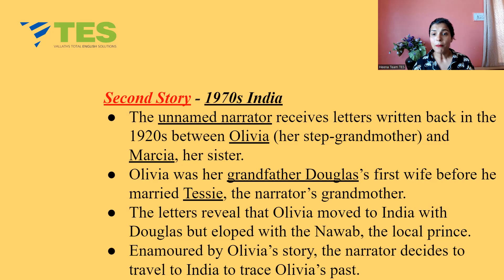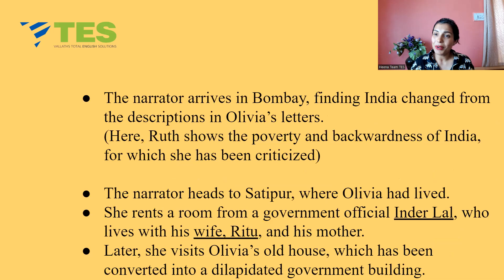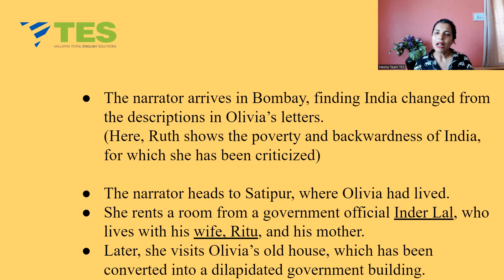Enamored by Olivia's story, the narrator decides to travel to India to trace Olivia's past. She arrives in Bombay, finding India much changed from the descriptions in Olivia's letters. Note that Ruth, our author, has shown the poverty and backwardness of India here, for which she has been criticized. The narrator heads to Satipur, where Olivia had lived. She rents a room from a government official named Inderlal — an important character — who lives with his wife Ritu and his mother.